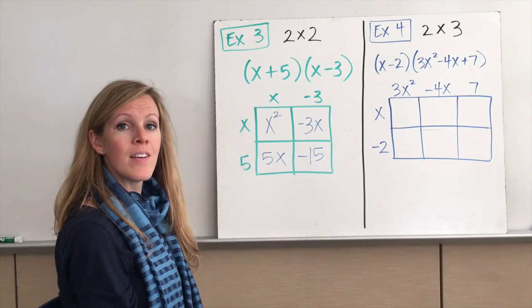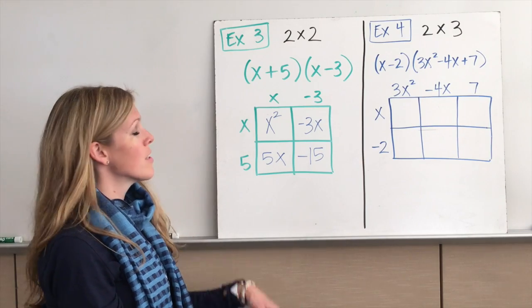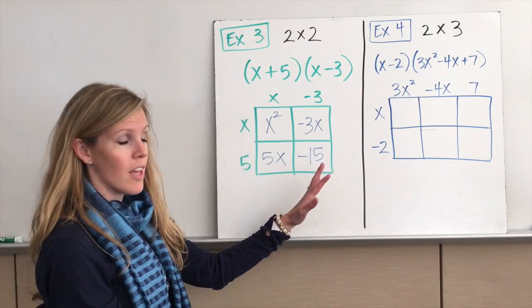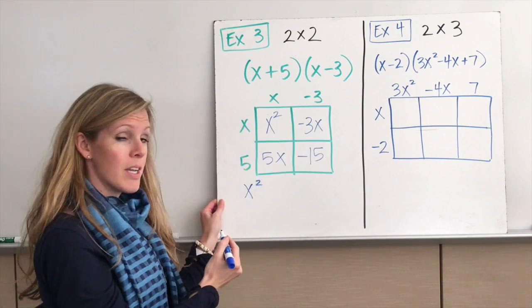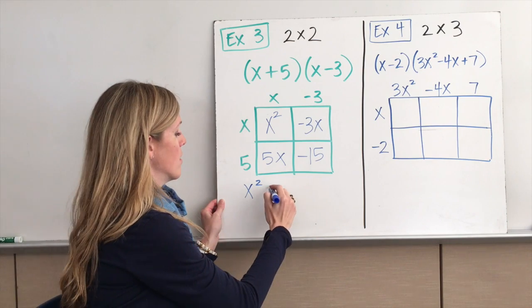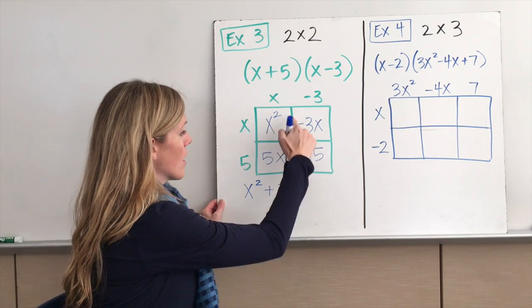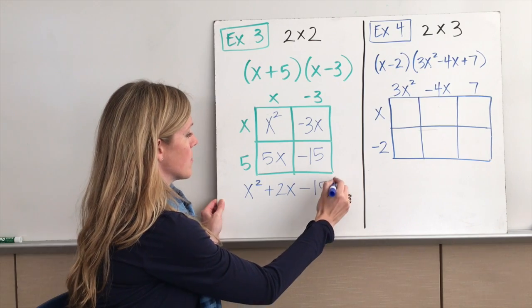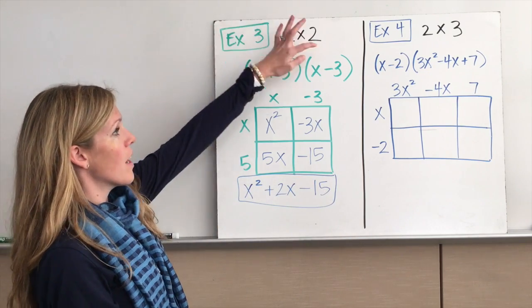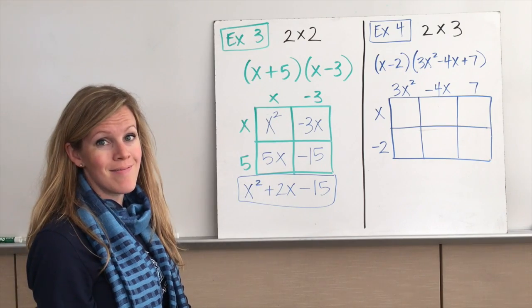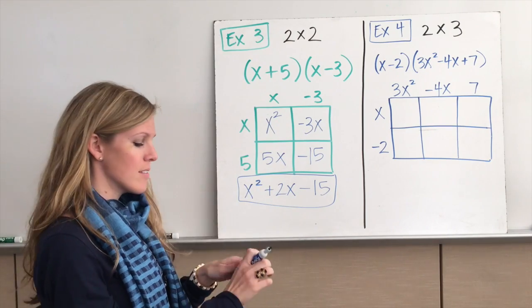Should I put my answer in standard form? Of course you should. So now we're going to add all these terms together. So we have x² + 5x - 3x gives us? Positive 2x. Positive 2x. And then we have -15. So there is our final answer to (x + 5)(x - 3). That wasn't very hard. It's not too bad, is it?